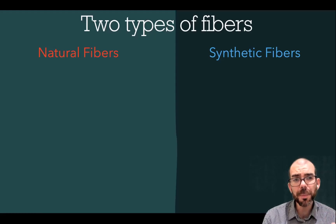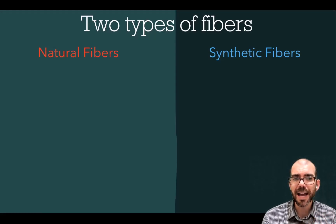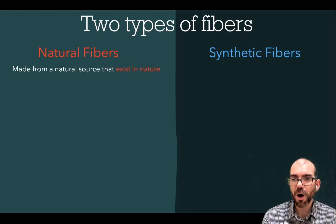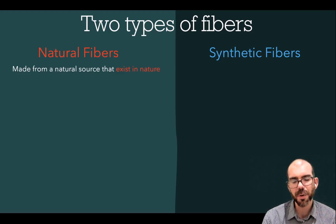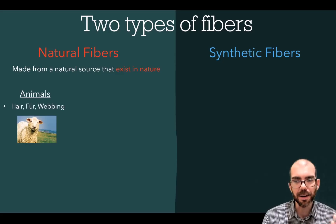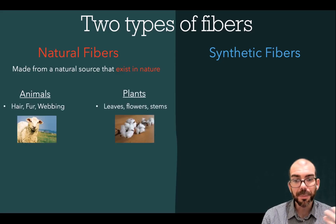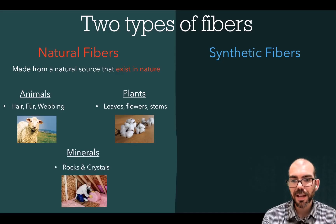There are two main categories of fibers: natural fibers and synthetic fibers. Natural fibers are made from a natural source — something that already exists in nature with no human intervention. These include things like animal fur, hair and webbing, plants such as leaves, flowers and stems, and minerals like rocks and crystals.